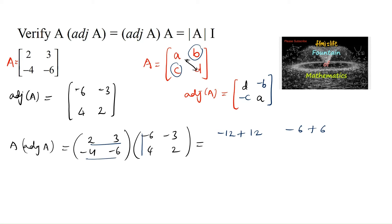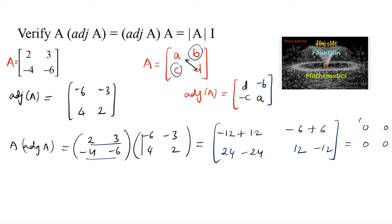For the second row, first column: (-4)×(-6) = 24, and (-6)×4 = -24. For the second row, second column: (-4)×(-3) = 12, and (-6)×2 = -12. So we are getting [[0, 0], [0, 0]] — a zero matrix.